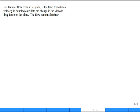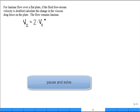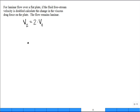What we can do is integrate to get the average friction coefficient. When you do that for the laminar region, the average C_F is 1.33 divided by the square root of the Reynolds number at L. If turbulent you can do the same thing. If you're in the turbulent, there's always a little bit of a laminar region in front. Let's solve a problem. For laminar flow over a flat plate, if the fluid free stream velocity is doubled, calculate the change in the viscous drag force on the plate. Assume the flow always remains laminar.